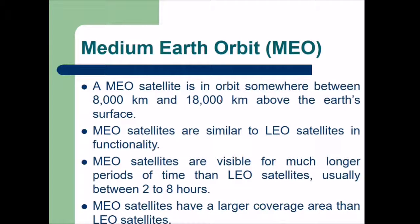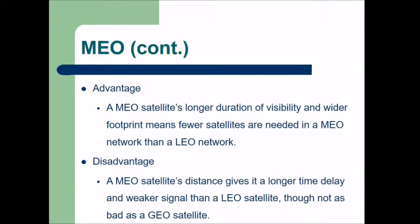MEO satellites orbit somewhere between 8,000 and 18,000 km above the earth's surface. MEO satellites are similar to LEO satellites in functionality but are visible for a much longer period — usually 2 to 8 hours. MEO satellites have a larger coverage area than LEO but less than GEO. The advantage is that longer visibility and wider footprints mean fewer satellites are needed compared to a LEO network. The disadvantage is a longer time delay and weaker signal than LEO, though not as bad as GEO.